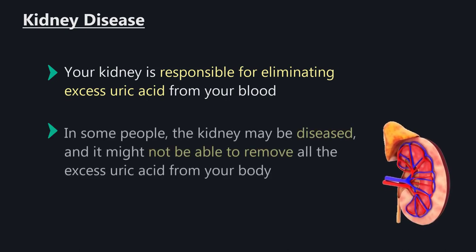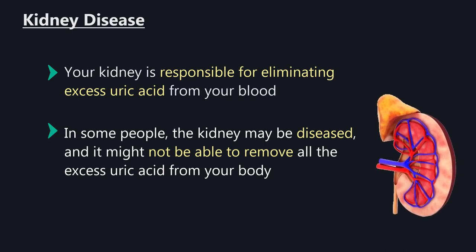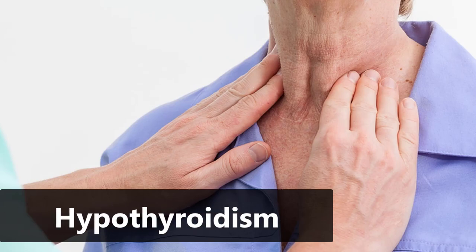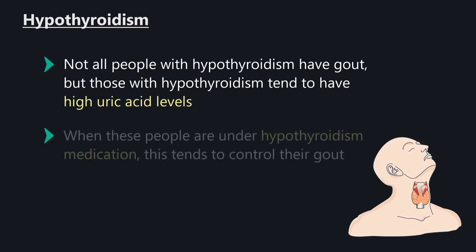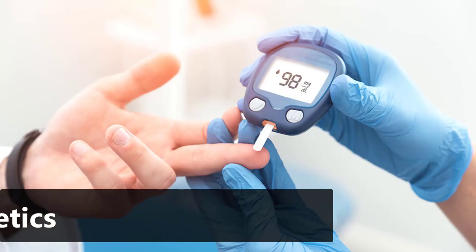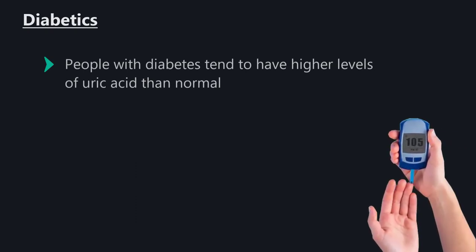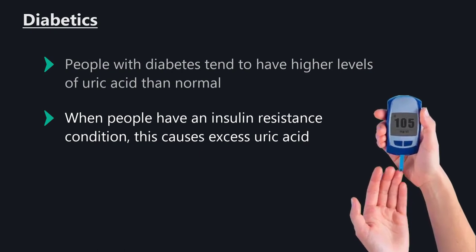Kidney disease: Your kidney is responsible for eliminating excess uric acid from your blood. In some people the kidney may be diseased and unable to remove all the excess uric acid from your body. Hypothyroidism: Not all people with hypothyroidism have gout, but those with hypothyroidism tend to have high uric acid levels; medication tends to help control their gout. Diabetics: People with diabetes tend to have higher levels of uric acid than normal, as insulin resistance causes excess uric acid.